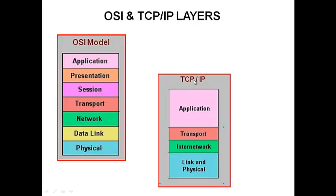TCP/IP — Transmission Control Protocol Internet Protocol — consolidated the seven layers of the OSI model into just four layers. The session, presentation, and application layers have been consolidated into just one application layer. The transport layer remains the same, the network layer is now called the internet layer, and the data link and physical layers become the network access layer.